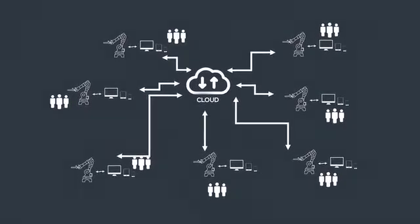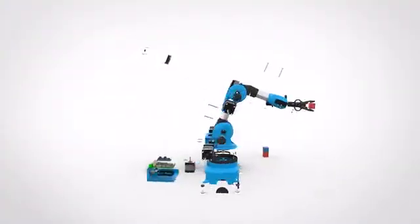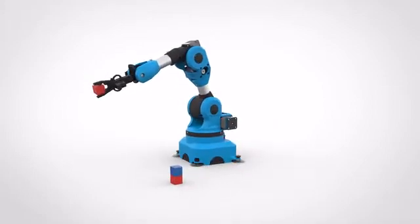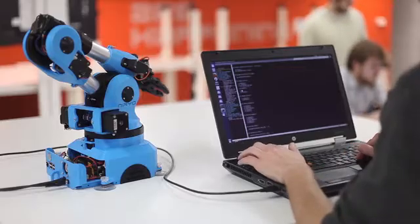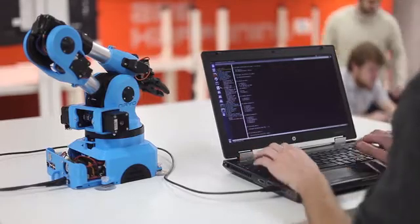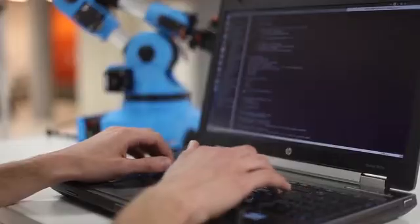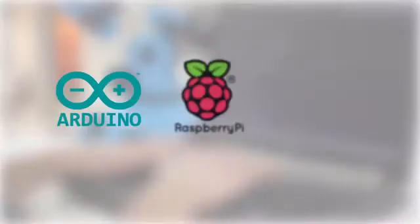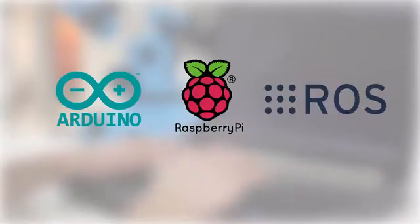We specially thought about makers and developers by making most of our code open source. STL files for 3D printing will also be released. You will be able to program directly on the robot with many APIs and the source code. It's a great way to learn robotics and do useful stuff with Arduino, Raspberry Pi, and Robot Operating System.